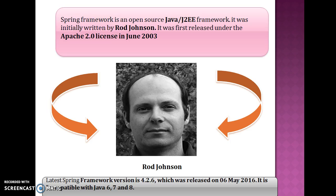Spring framework is an open source Java J2EE framework. It was initially written by Rod Johnson and first released under the Apache 2.0 license in June 2003. The latest Spring framework version is 4.2.6, which was released on 6th May 2016. It is compatible with Java 6, 7, and 8.